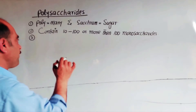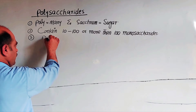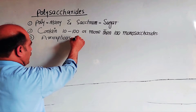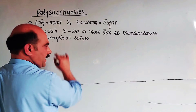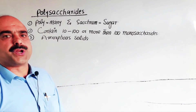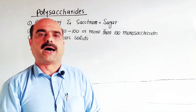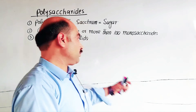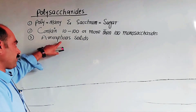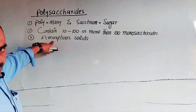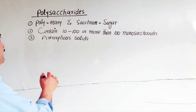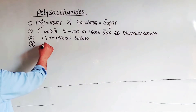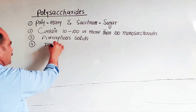Regarding physical properties: polysaccharides are amorphous solids. Crystalline solids have a regular 3-dimensional arrangement of particles, but amorphous solids have a random arrangement of particles. Amorphous means powdered — they exist in a powdered or paste-like solid form.